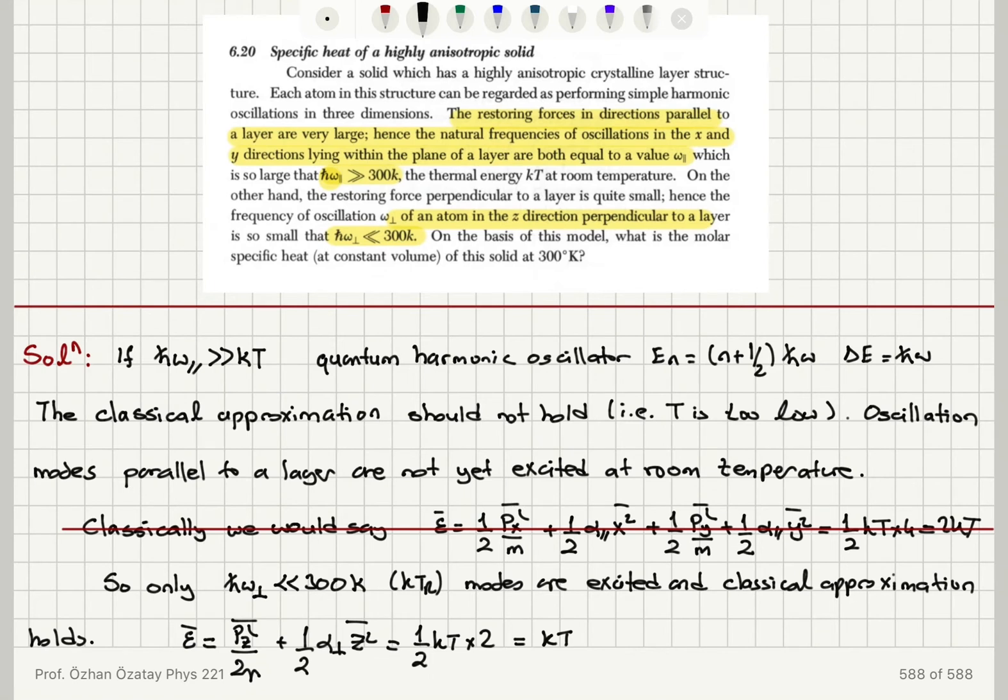Okay, so if I have n oscillators, n oscillators would have a total average energy n times epsilon bar, nkT. And for 1 mole,